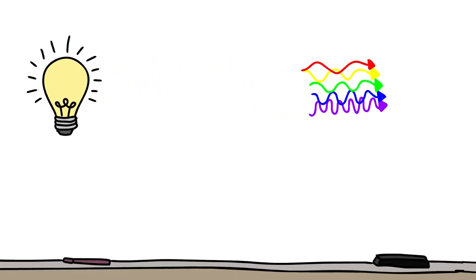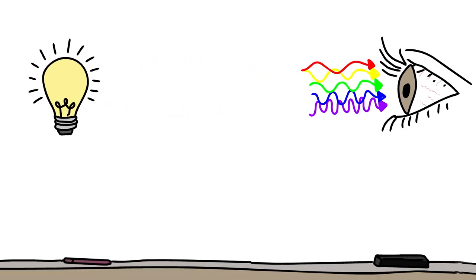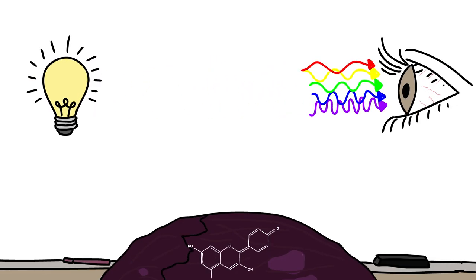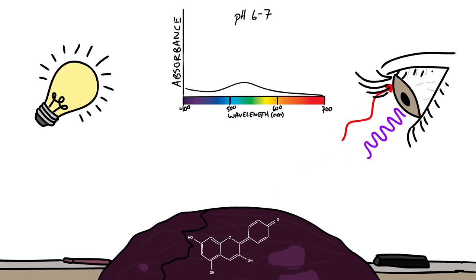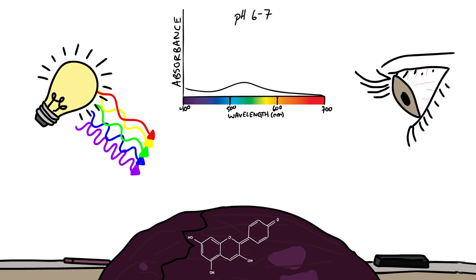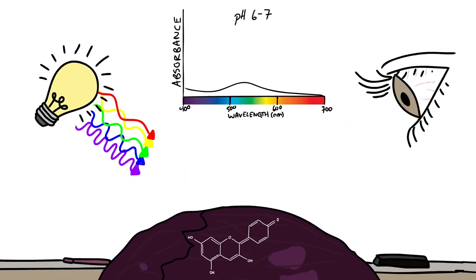Well the light in the room is a mixture of all colors, which is why it appears white. When this white light bounces off the anthocyanin molecules, the green and yellow light are absorbed by the molecule, but not the red, the blue, and the purple. They bounce off the cabbage and hit us on the eyeballs, we interpret the mixture as purple.